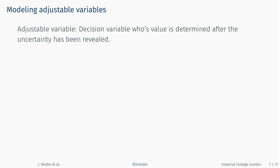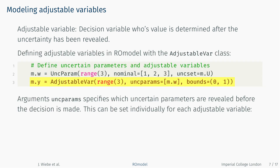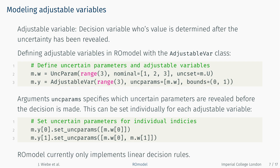Robust problems may also contain adjustable variables. These decision variables are determined after at least some of the uncertainty has been revealed. The AdjustableVar component in Roamodel works the same way as the regular var component in PyOMO, but has an additional argument defining a list of uncertain parameters revealed before the decision is made. This list can be set individually for each index of the adjustable variable, allowing the definition of multi-stage adjustable robust problems.